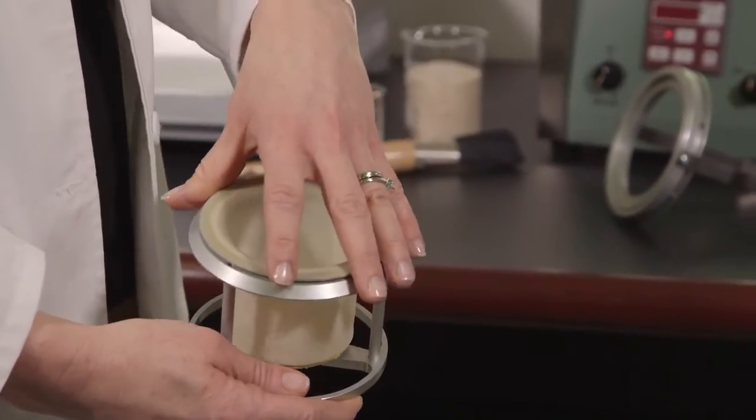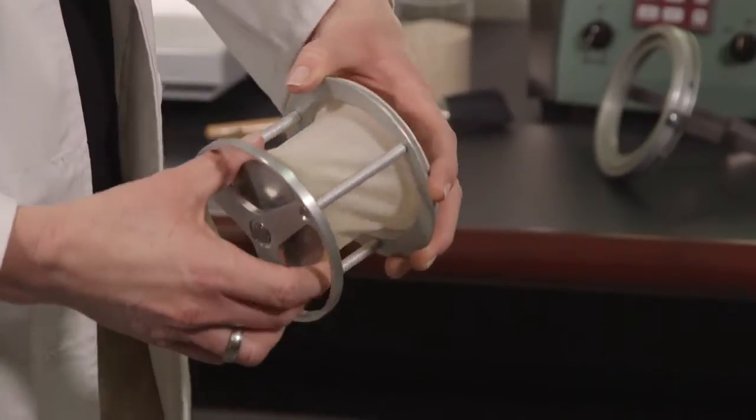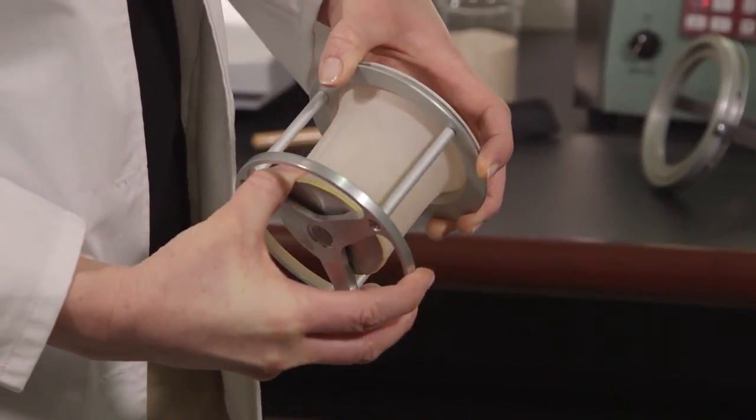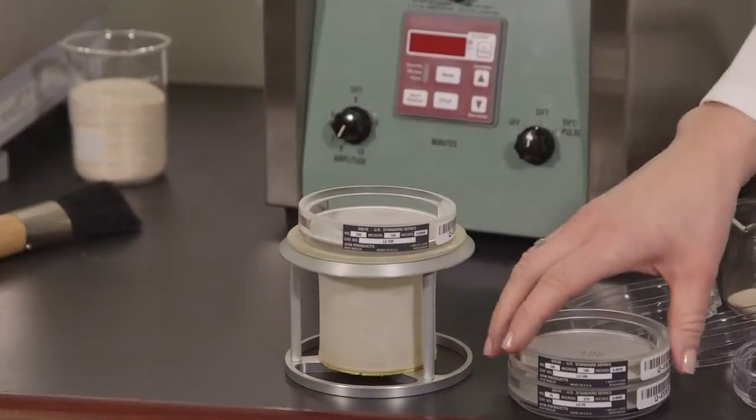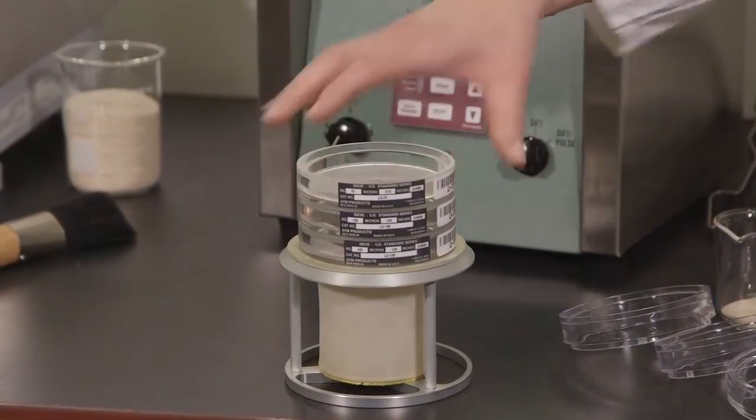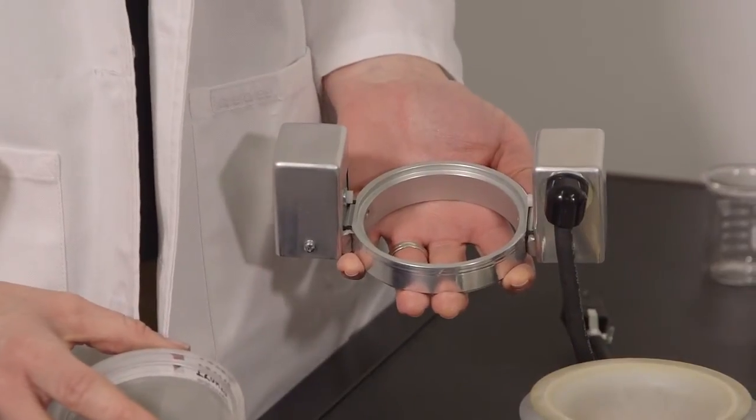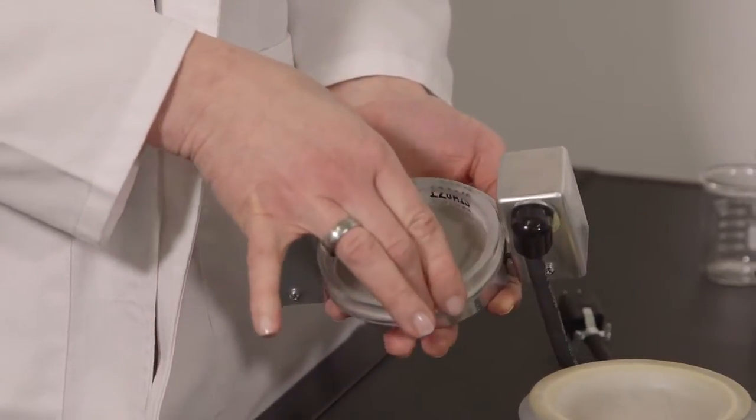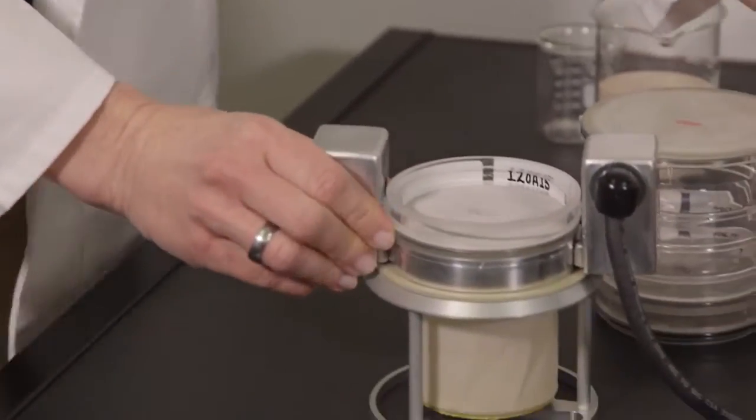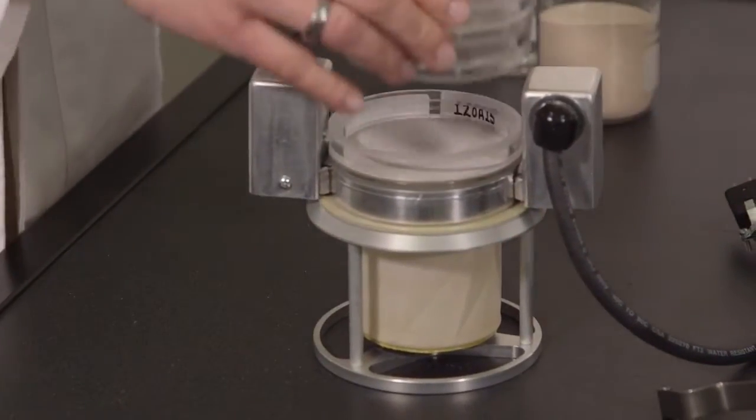Drop the fines collector into the holder and lock into place. Assemble the sieve stack with the finest sieve on the bottom, arranging coarser toward the top. When working with samples finer than 45 microns, you may find the addition of the L3N8 horizontal pulse accessory helpful in reducing agglomeration.